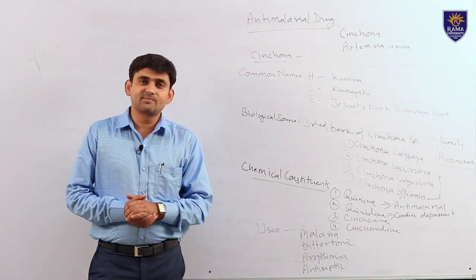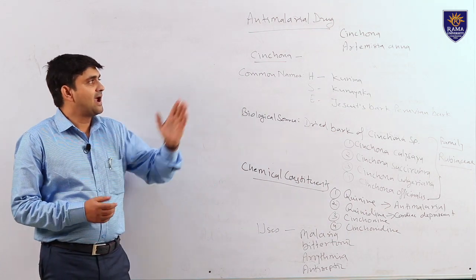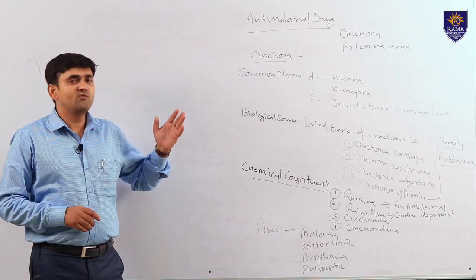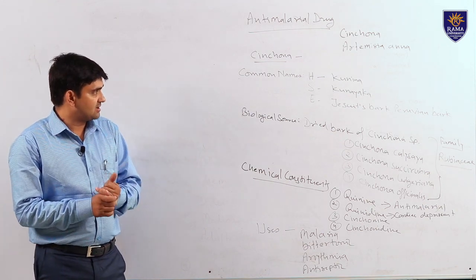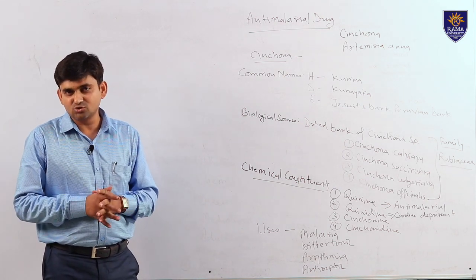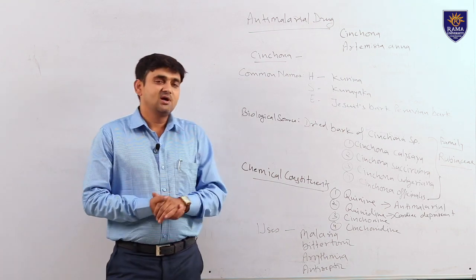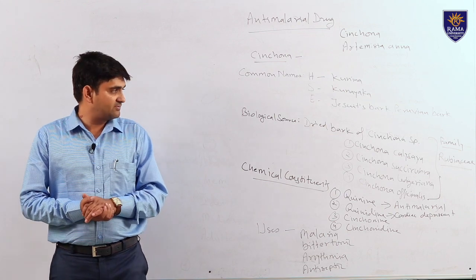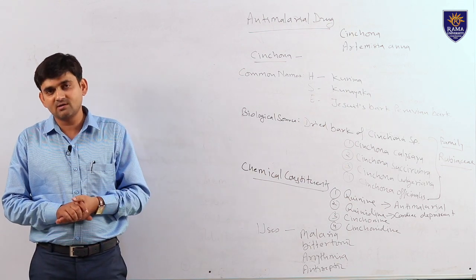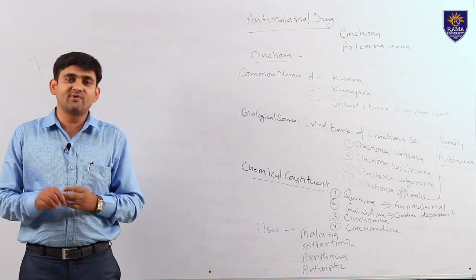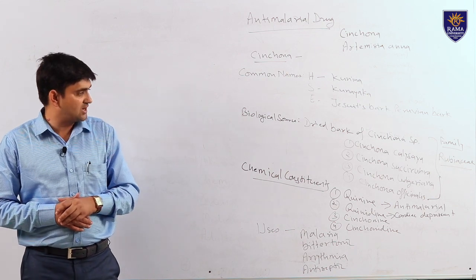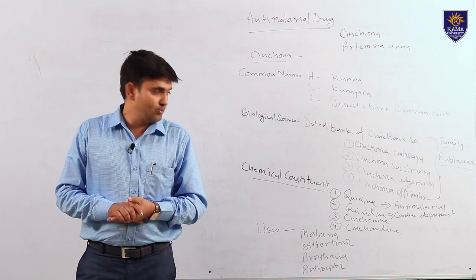Now we will discuss the next category of drugs: anti-malarial. Cinchona and Artemisia annua are the most common drugs used to treat malaria. We will discuss Cinchona. Common name in Hindi is Kunina, in Sanskrit it is Kunayaka, and in English it is Jesuits' Bark and Peruvian Bark. Biological source: the drug is obtained from the dried bark of the plant Cinchona. Four different species of Cinchona are used: Cinchona calisaya, Cinchona succirubra, Cinchona ledgeriana, and Cinchona officinalis, belonging to family Rubiaceae.